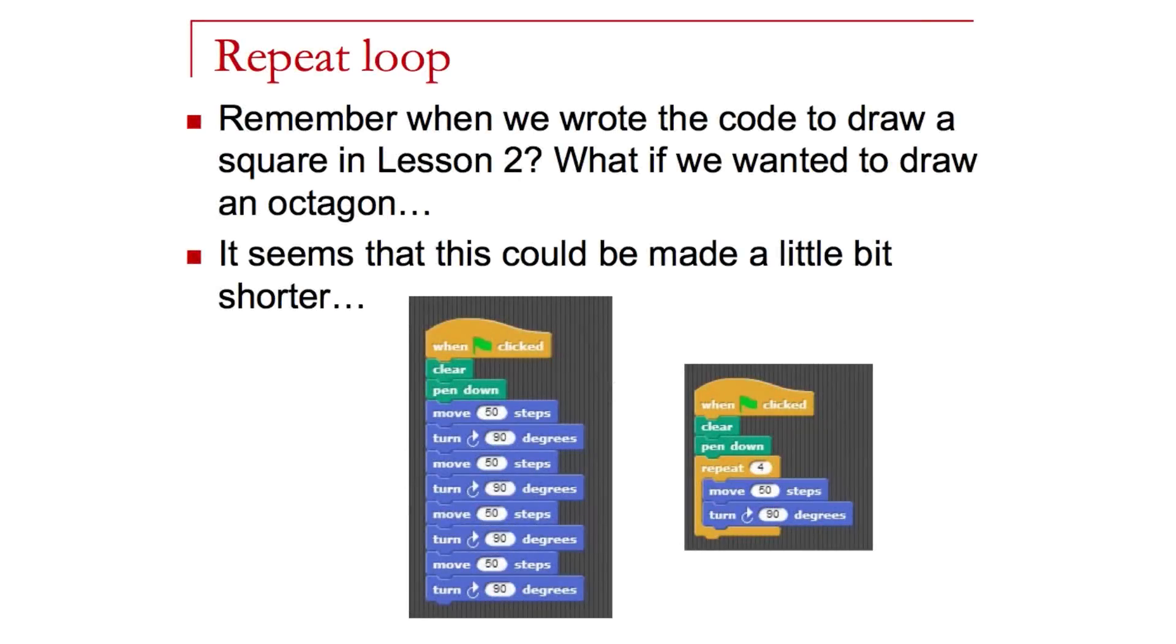You may recall from lesson 2 when we did our first look at Snap Live, we drew a square using 8 blocks, or actually 10 blocks, but 8 were drawing the actual square. On the bottom left of this slide, you can see the code we wrote from that particular lesson. We are moving 50 pixels, and then we're turning 90 degrees, and we're doing that 4 times. So a total of 8 blocks: a move, and then a turn, 4 times. That's 2 blocks per each of the 4 sides of the square.